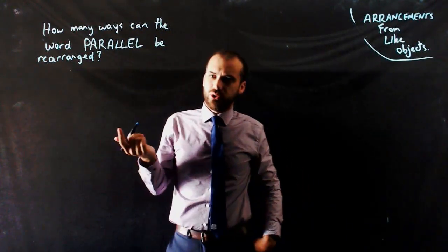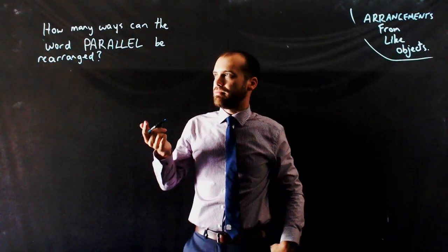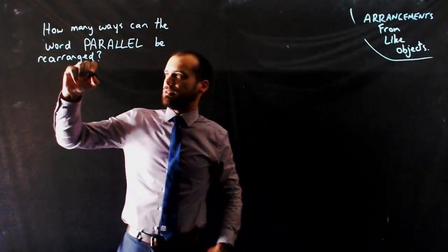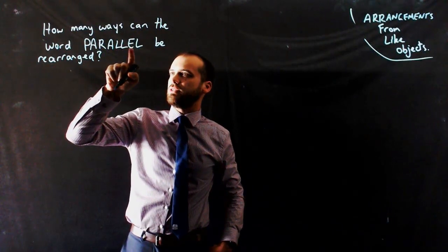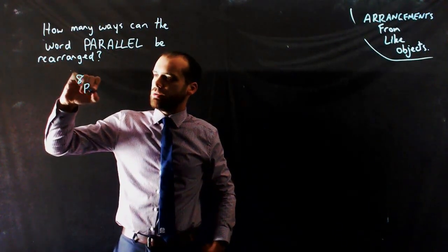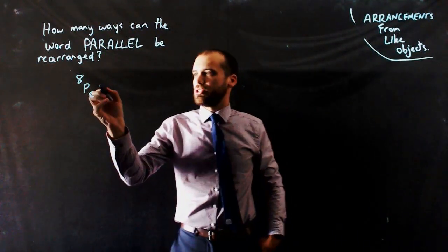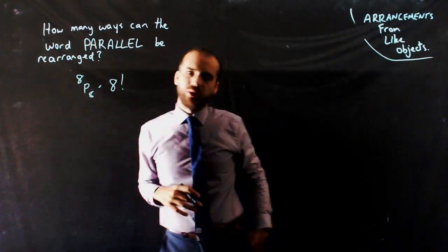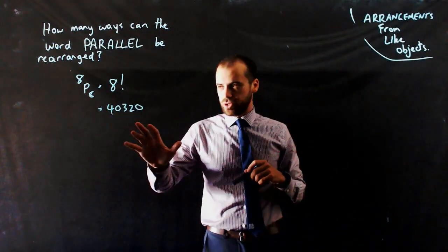Because we're just asking 8 permute 8, which is just going to be 8 factorial, which is some large number, 40,320.